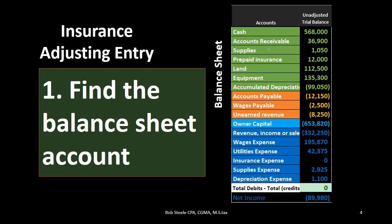Step one for adjusting journal entries: find the balance sheet account. We're going to look at our trial balance and consider those accounts which are the balance sheet accounts — you'll always want to have a trial balance or chart of accounts in front of you. Most problems will give you a keyword; for example, insurance. Whatever the problem says, it'll focus around insurance, supplies, depreciation, unearned revenue, wages payable, or accrued wages — a key term that almost always names an exact account.